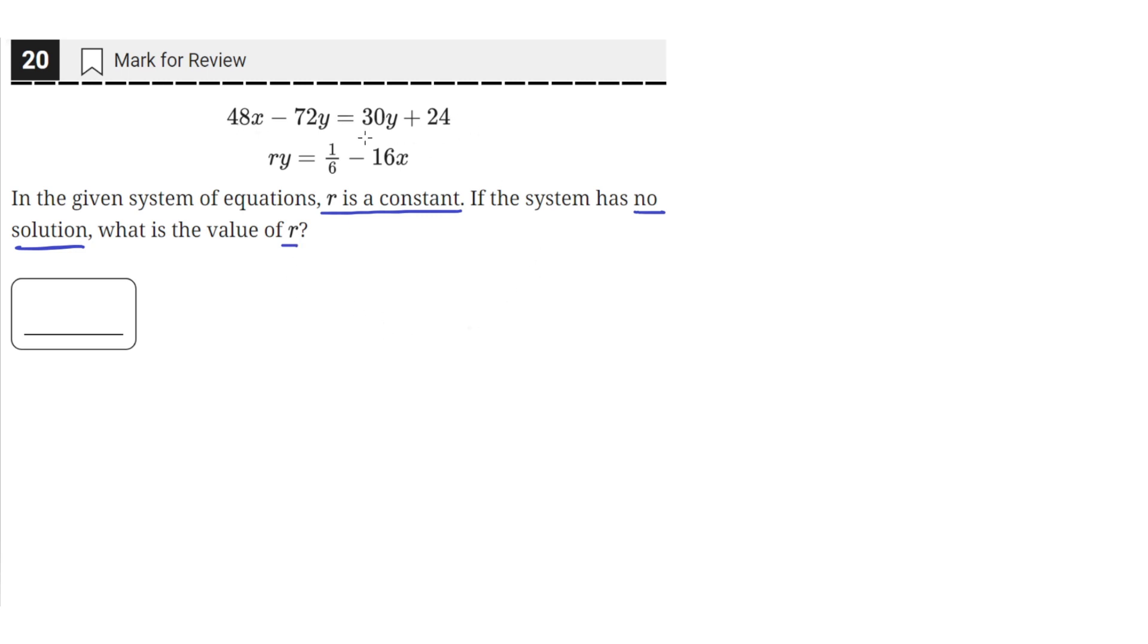So we have these two lines right here. We'll call them equation 1 and equation 2. We need to find a value of r such that this system has no solution. A system of two lines has no solution when the lines are distinct and parallel. Say this line is line 1 and this one is line 2 on the xy plane. These lines are parallel and distinct, meaning their y-intercepts are different. So these two lines will never intersect, which means they have no solution.